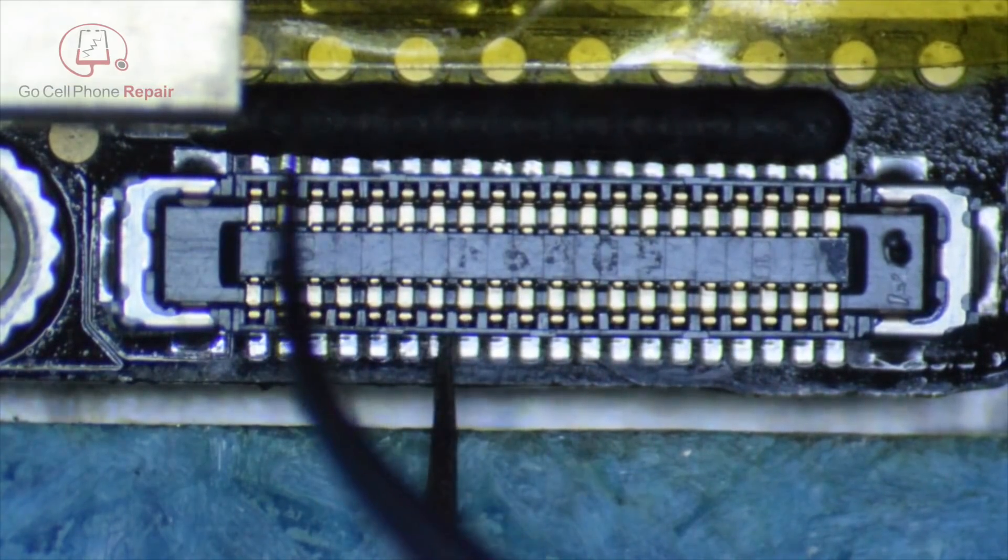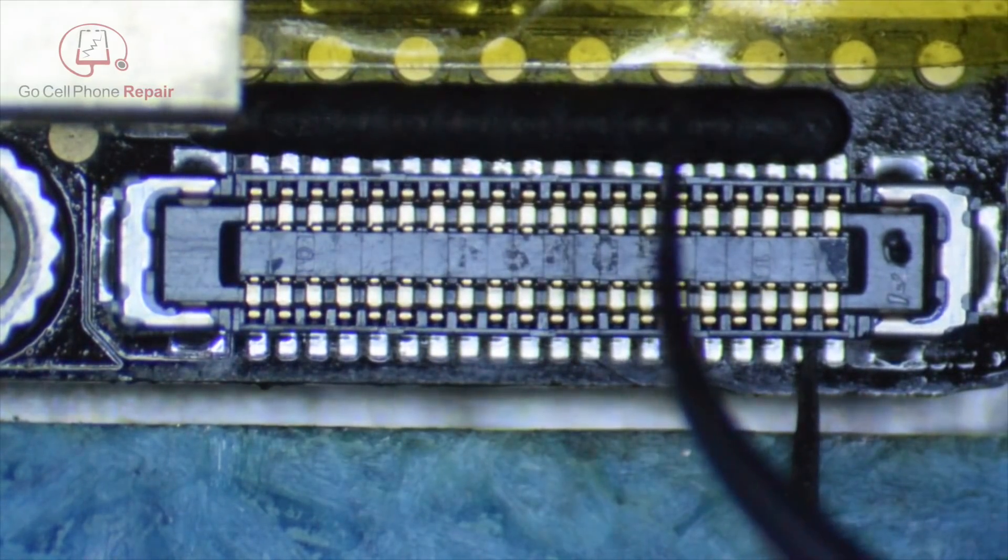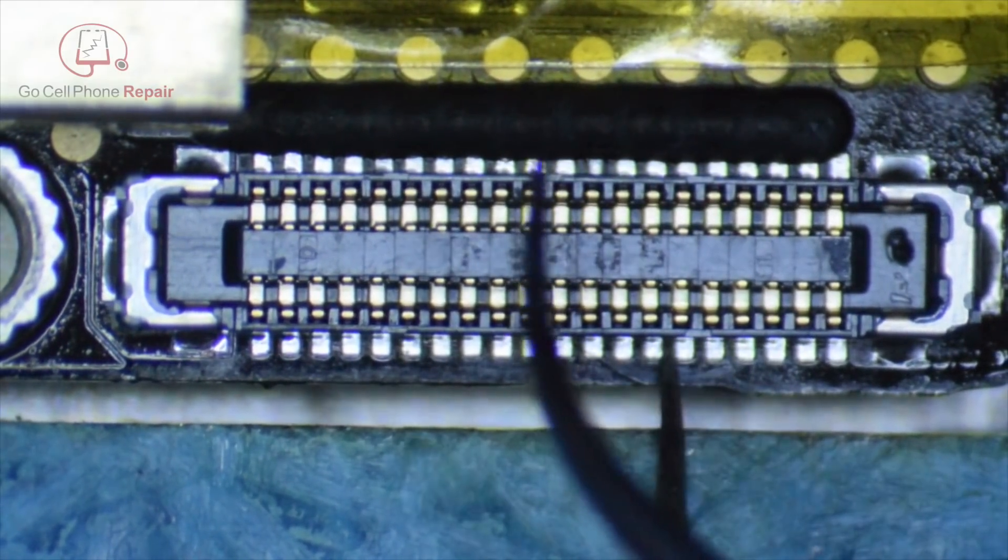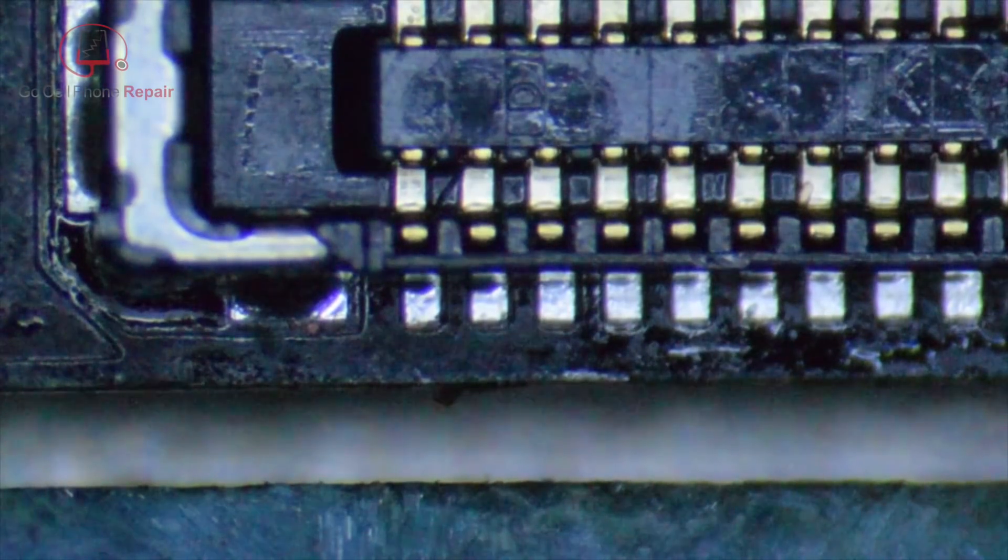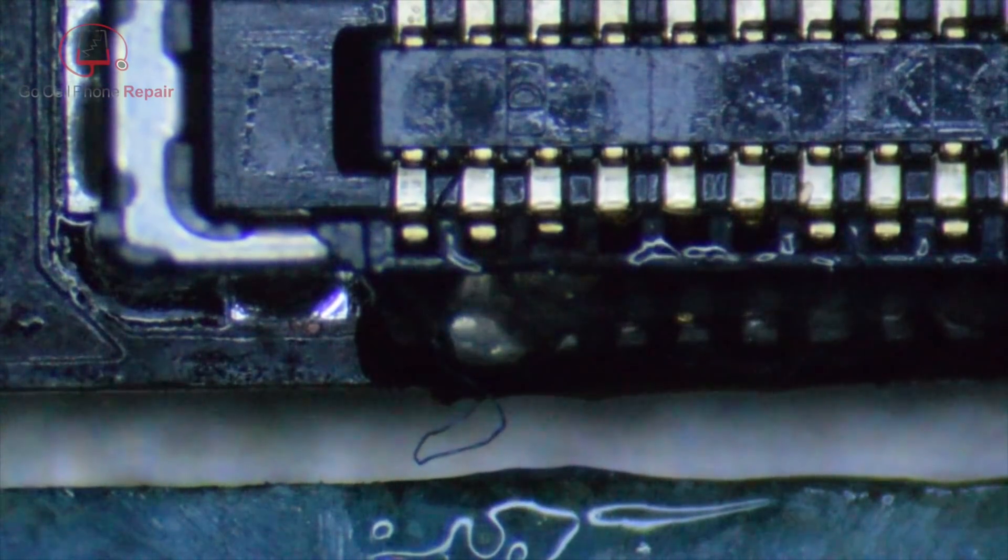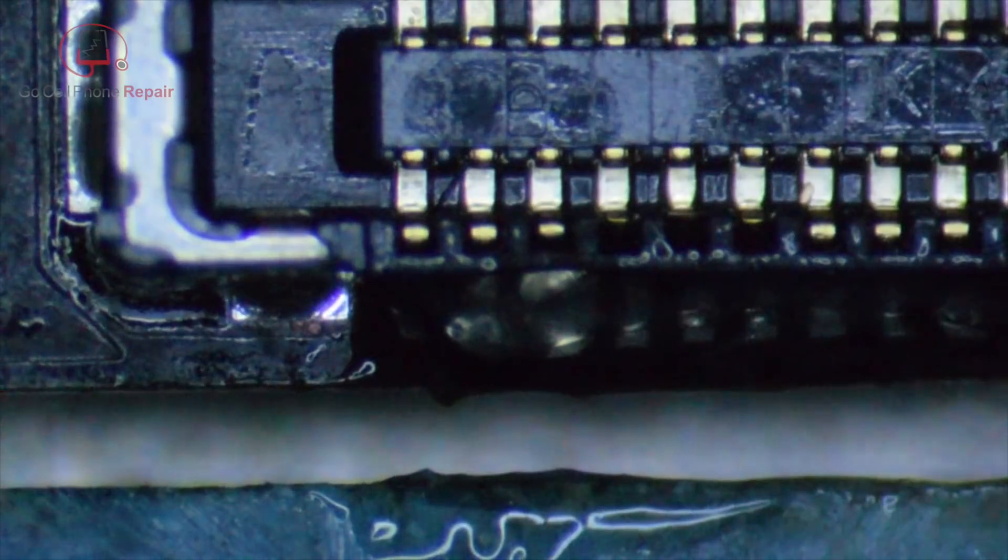Next thing I do is take my tweezers and check all of these and see if any of them are loose and need specific attention. But beyond that, I am going to go over this with the iron, add a little bit of flux and touch these up by hand because I like to have that tiny little bit of extra solder on the outside just in case.